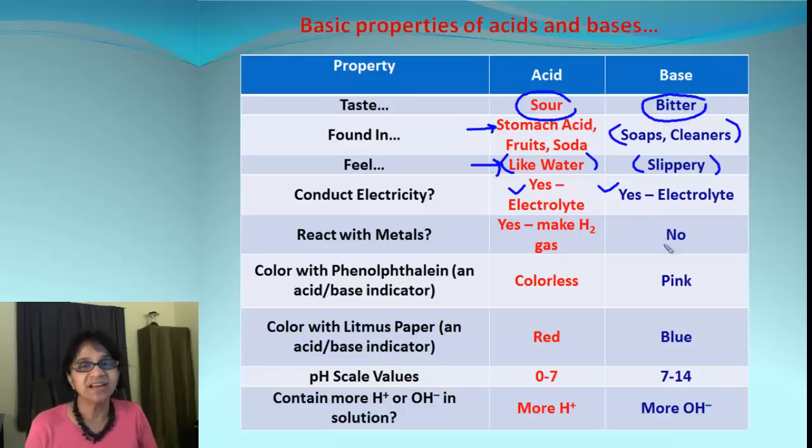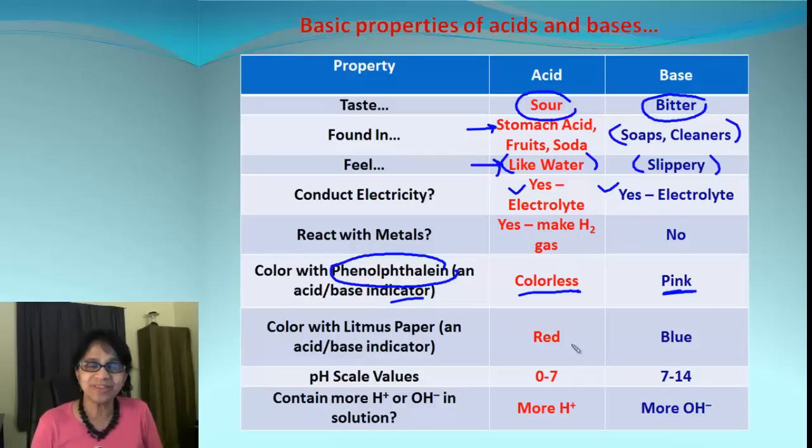Reaction with metals: yes, acids can react with metals, but bases may not react with metals. The color: there is phenolphthalein which is an indicator. It will remain colorless in acids and it will turn pink with base. Then there is blue litmus paper, and what happens with litmus paper? If it is blue litmus, that would turn red.